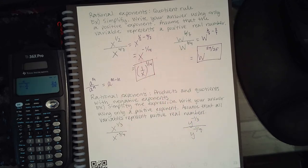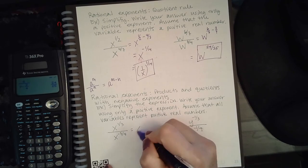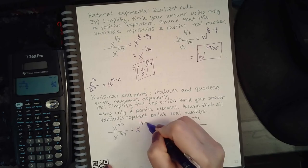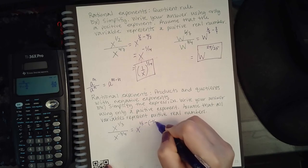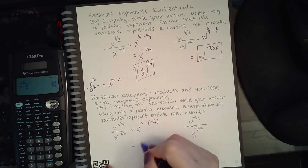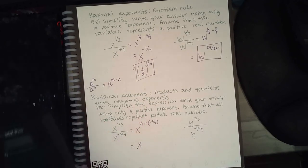So again, if you end up with the negative, you need to flip it over to make it positive exponent. And the same thing as always, assume your variables represent positive real numbers, so you can't ever say that the answer is not a real number. Okay, so we do have to follow the rules here.